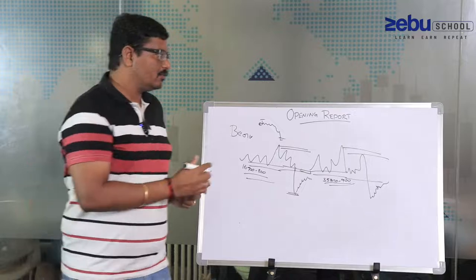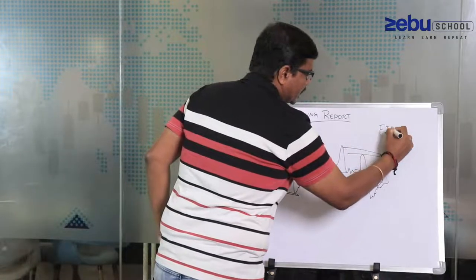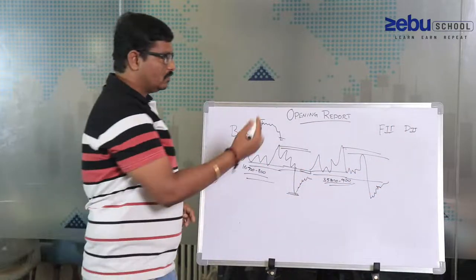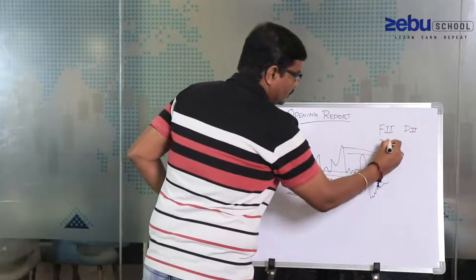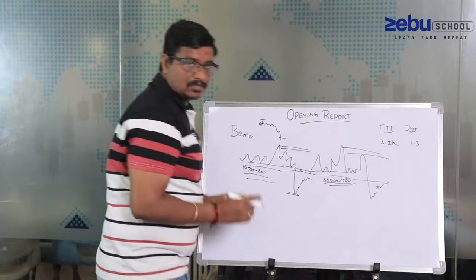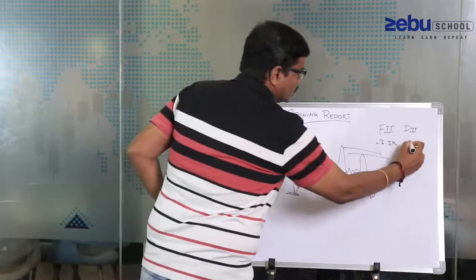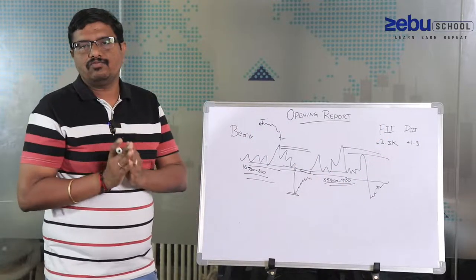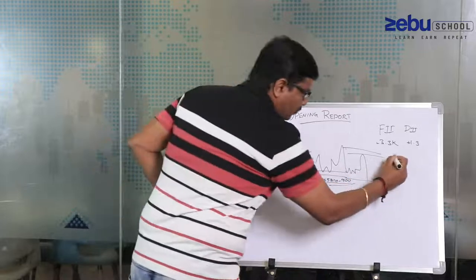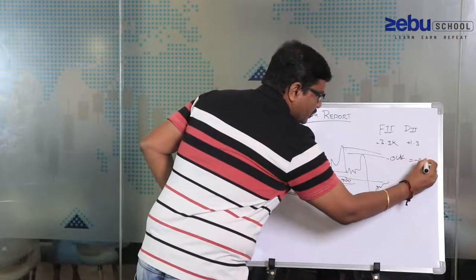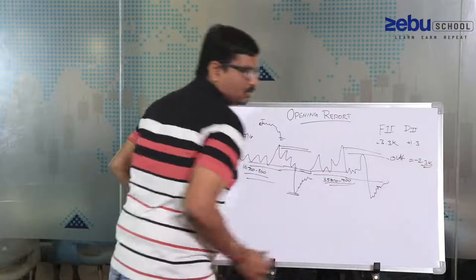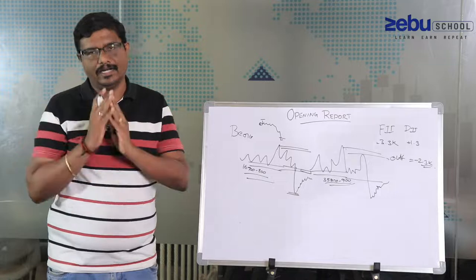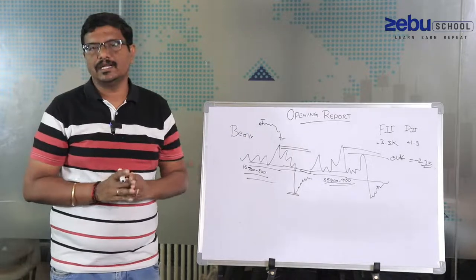If you look at FII and DII, I generally don't concentrate on individual numbers, but FII sold almost 3.3k crore and this was done. This was a sell, this was a buy. Net, I always calculate net as outflow or inflow. Yesterday was an outflow of minus 2.3k crore. The price action was bearish. Even looking at the data and the fall, the data was bearish. Looking at the institutional data, it was bearish.